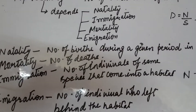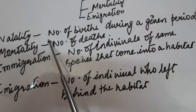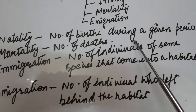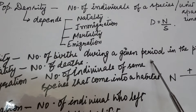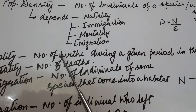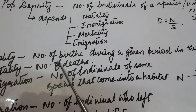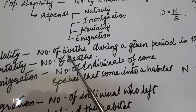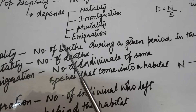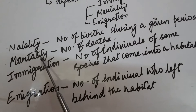Now coming to the factors — what is natality? Natality is the number of births during a given period in the population that are added to the initial density. When the population size is known previously, we add the number of births to that initial density to understand natality.